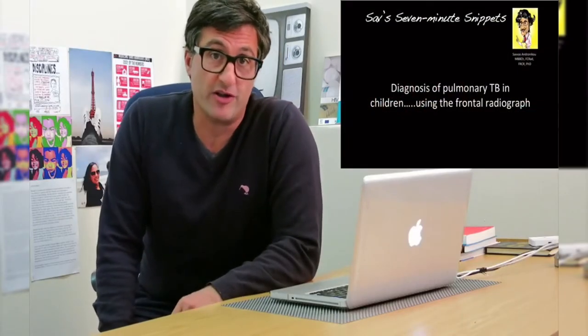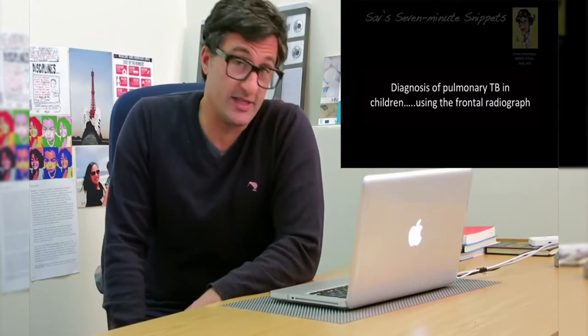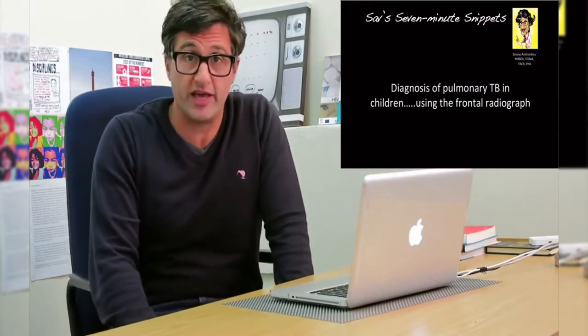Hi, my name is Savas. I'm a radiologist working in Africa and this is one of Sav's 7-minute snippets. This lecture is about diagnosing TB in children, in particular using the frontal chest radiograph — we'll use another lecture to look at the lateral chest radiograph. The lecture is designed for use by anybody working with children and needing to make a diagnosis of TB, and it's intended that these skills help you make a diagnosis at the point of care.